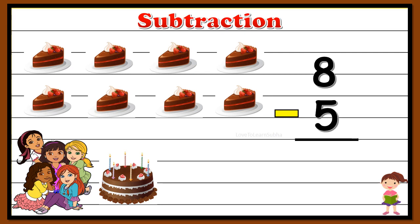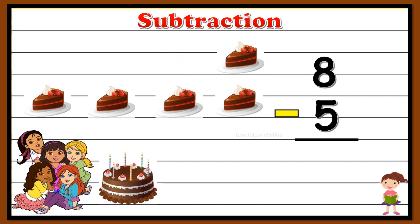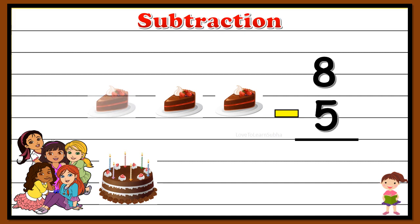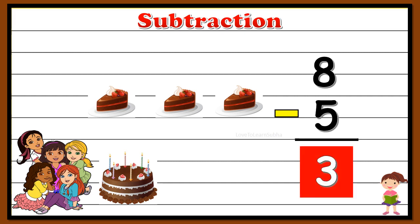Now let's count to find the remaining balance. After subtracting five — one, two, three, four, five — let's see the balance: one, two, three. So eight minus five gives you the value three.